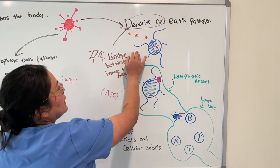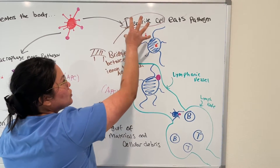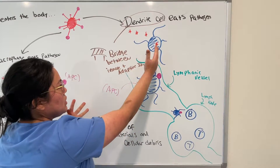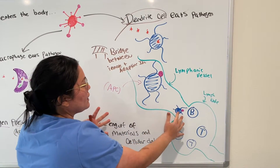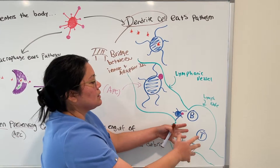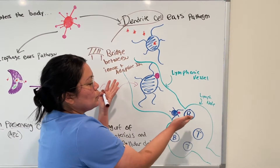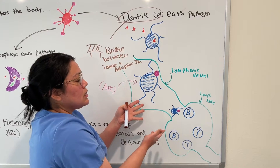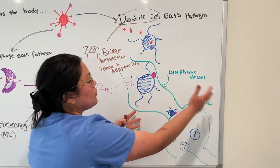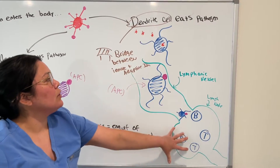The dendritic cell basically takes the antigen, travels from the tissue or from a site of damage to the lymphatic system, and alerts the B and T cells, saying, hey, do you guys recognize this antigen? If you do, it's invaded our body. Then the B and T cells multiply and make an army to fight against that pathogen.